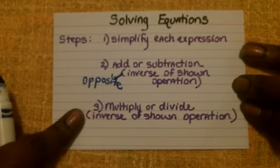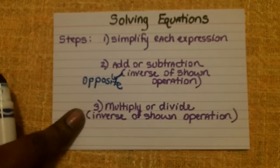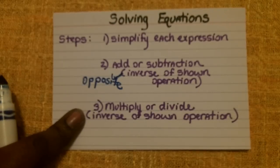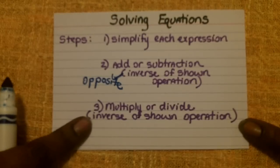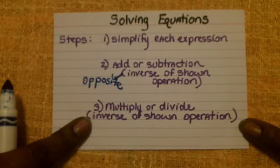Step three is to multiply or divide. And again, it is going to be the inverse of whatever operation is being shown in the equation.